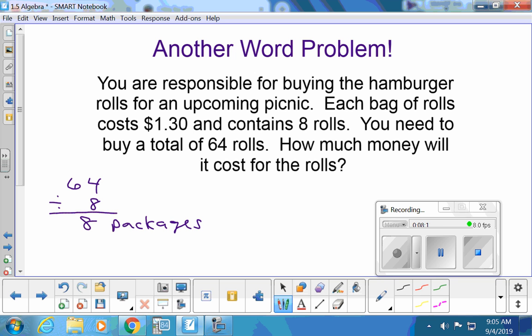So we need to buy eight packages. Now what should I do? Perfect. Multiply the number of packages you need by the price. Who was saying that, right? I'm not scholarly, right? $10.40. $10 in hamburger buns.